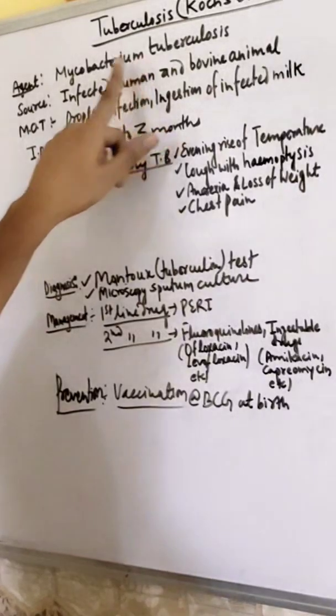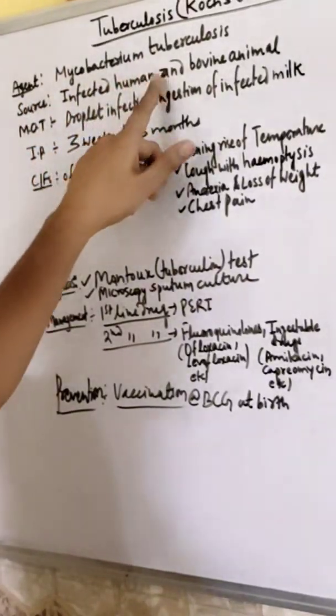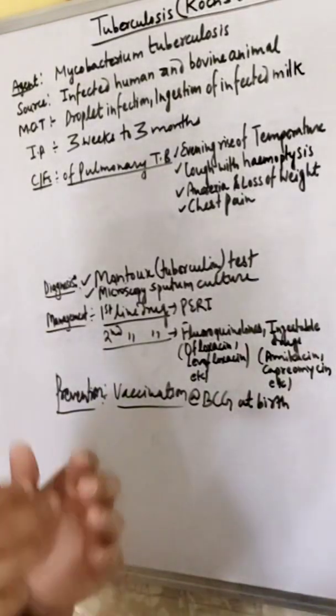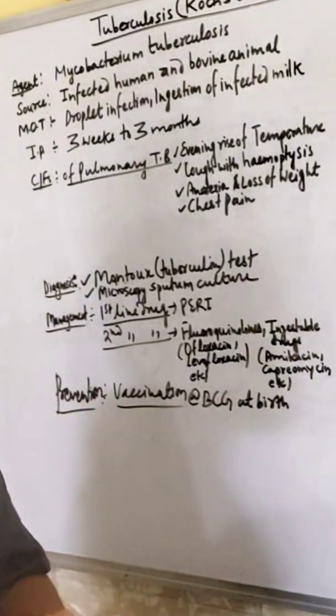Mycobacterium tuberculosis source: infected human and bovine animals. We already know that TB is pulmonary TB and extra pulmonary TB.